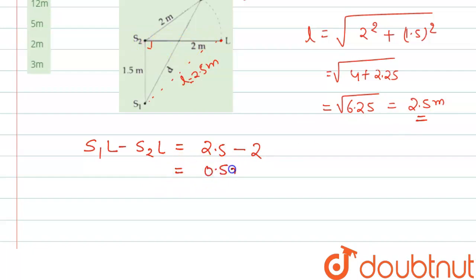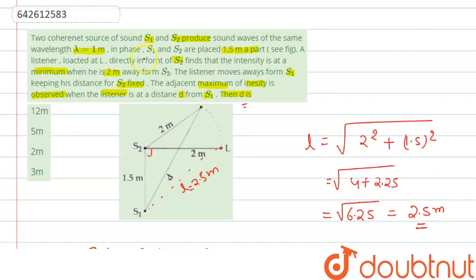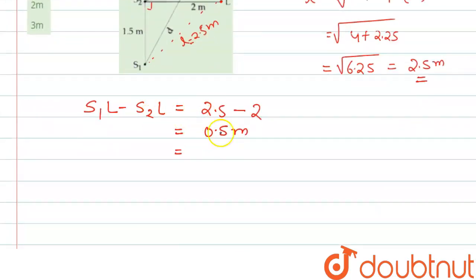0.5 meters. If we write this in terms of lambda, we see that lambda is 1 meter, so 0.5 meters will be lambda by 2.